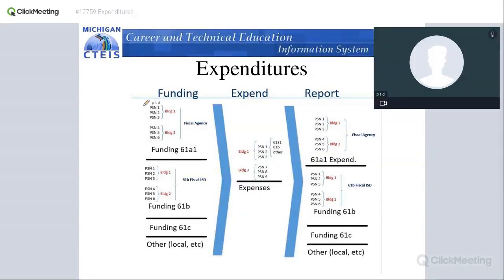We generate funding based on a PSN — the program serial number — which identifies a specific program in a building. A particular building might have three programs, and they all generate funds. Building 2 also generates funds. Building 1 and Building 2 are members of a particular fiscal agency, and all of these roll up to the fiscal agency, so the fiscal agency is given the money that these PSNs generate at the building level.